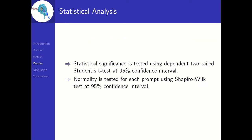Before looking at the results, a word about the statistical analysis used in this work. Statistical significance is tested using a dependent two-tailed Student's T-test at 95% confidence interval. A dependent test is used since we are computing the MPC values of each subject for both types of prompts. A two-tailed test is used since there are no concrete relationships between the MPC values of bilabials and nasals. Since Student's T-test requires the data to be normally distributed, normality is tested for each prompt using the Shapiro-Wilk test at 95% confidence interval.